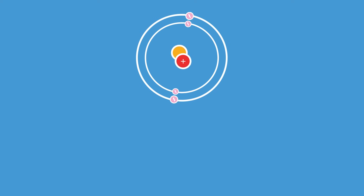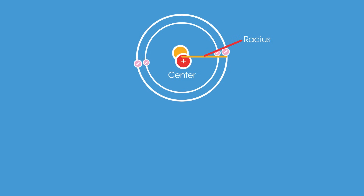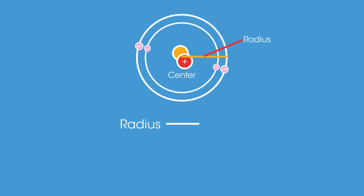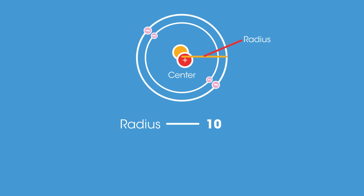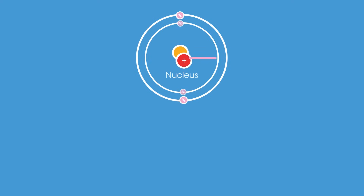So that's the mass of an atom — let's talk about its size. One way to describe the size of an atom is its radius. The radius of an atom is the distance from its center, where its nucleus is, to the outermost shell of electrons. The radius of an atom is typically ten to the power of negative ten meters, which is very small.